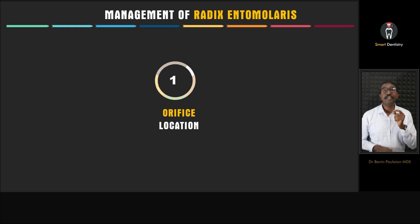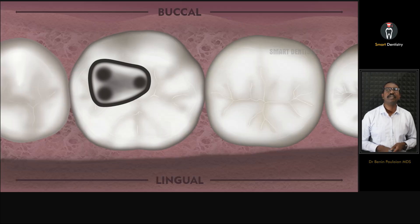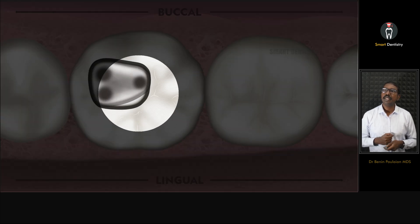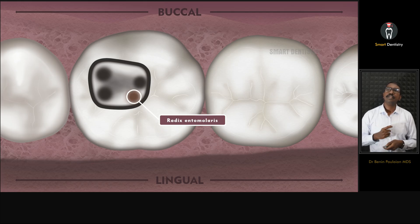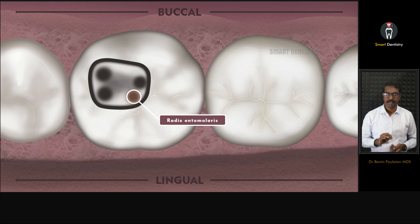First, how to locate the root canal orifice — what is the ideal and exact location of a radix root. In a conventional access cavity preparation for a mandibular first molar, we can see the mesiobuccal, mesiolingual, and distal canals. But in order to locate a radix, we have to extend the access cavity more lingually and distally. Once you extend the access cavity, we can locate the radix root in this location — which is lingual to the distal canal and maybe a little mesial.